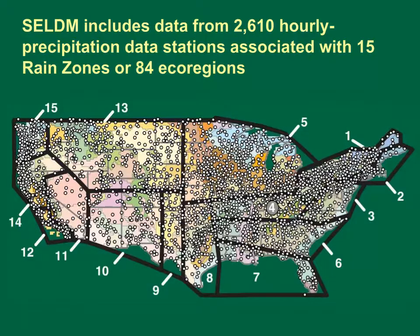The storm event statistics in SELDM are based on values from 2,610 hourly precipitation data stations that have at least 25 years of record during the 1965 through 2006 period. On this map, the precipitation stations are white dots, the rain zones are thick black lines, state boundaries are gray, and the ecoregions are the pastel colored polygons. In SELDM, you can use the average or median value of all stations in a rain zone or ecoregion, or you can select statistics from one or more nearby sites.